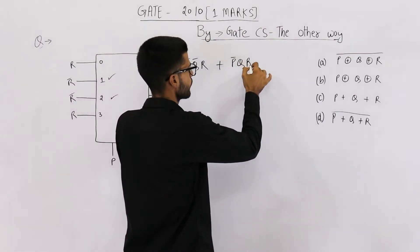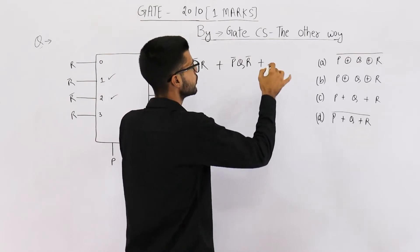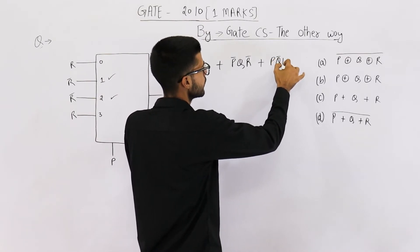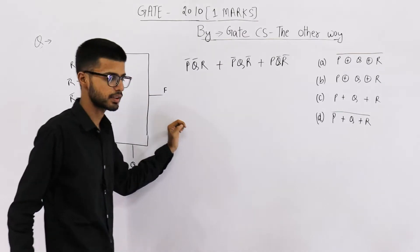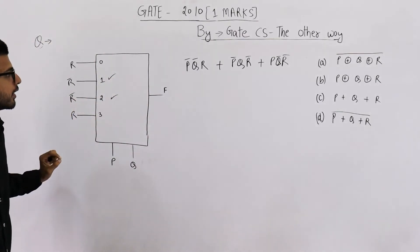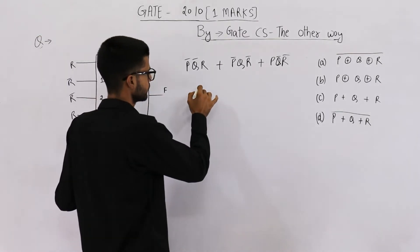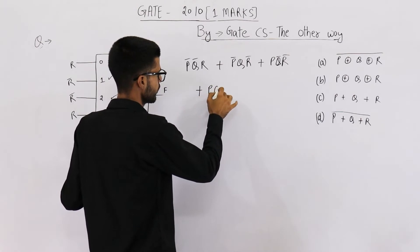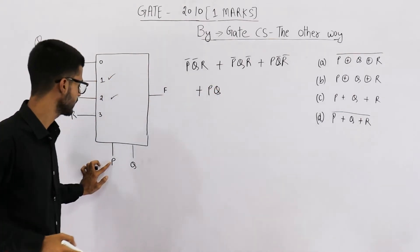Next one is one zero, that means p is one, q is zero. In this case also you can see output is r bar. And the last case is when both of them are one one, p is one as well as q is one.